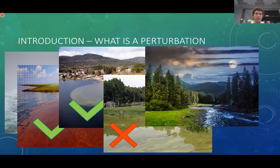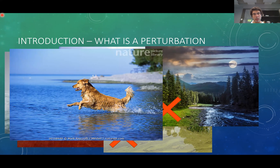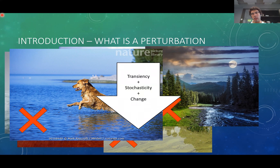It's a bit more obvious that day and night cycles will not be considered as a perturbation to the system. And maybe the easiest one: a dog jumping in the lake would not be considered a perturbation. What all perturbations have in common is this aspect of being transient — not permanent in time, being stochastic so not happening cyclically, and bringing this idea of change.